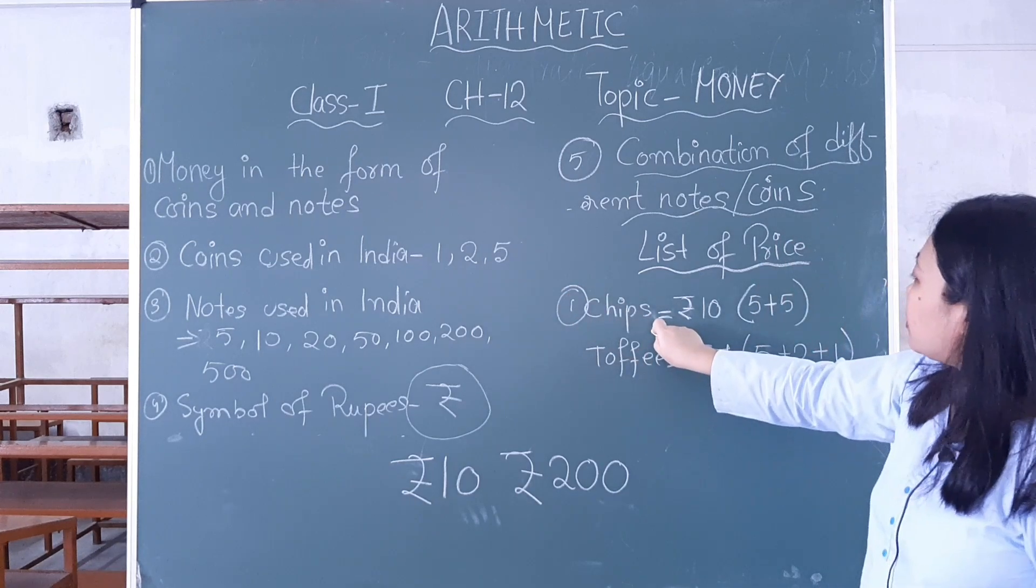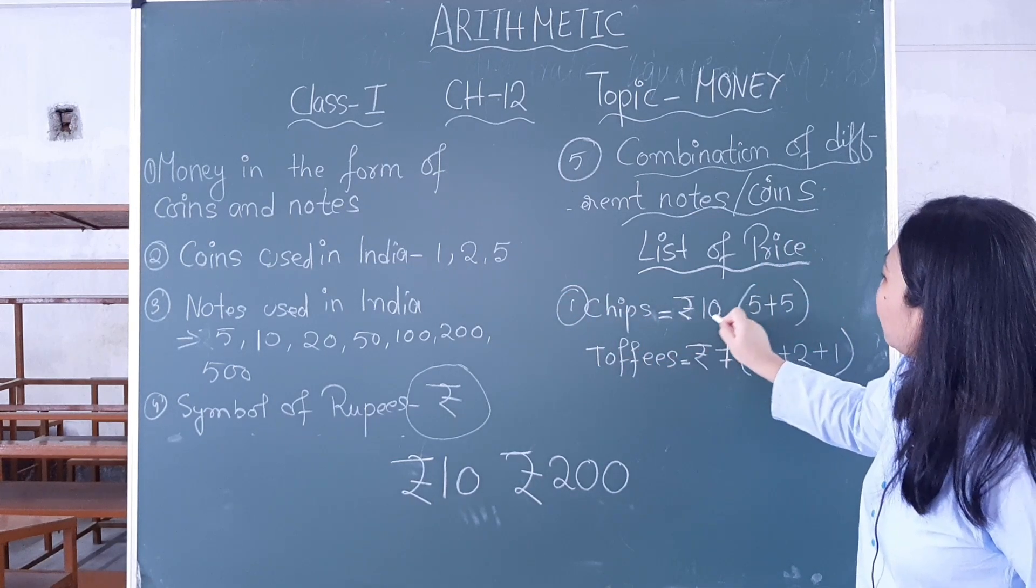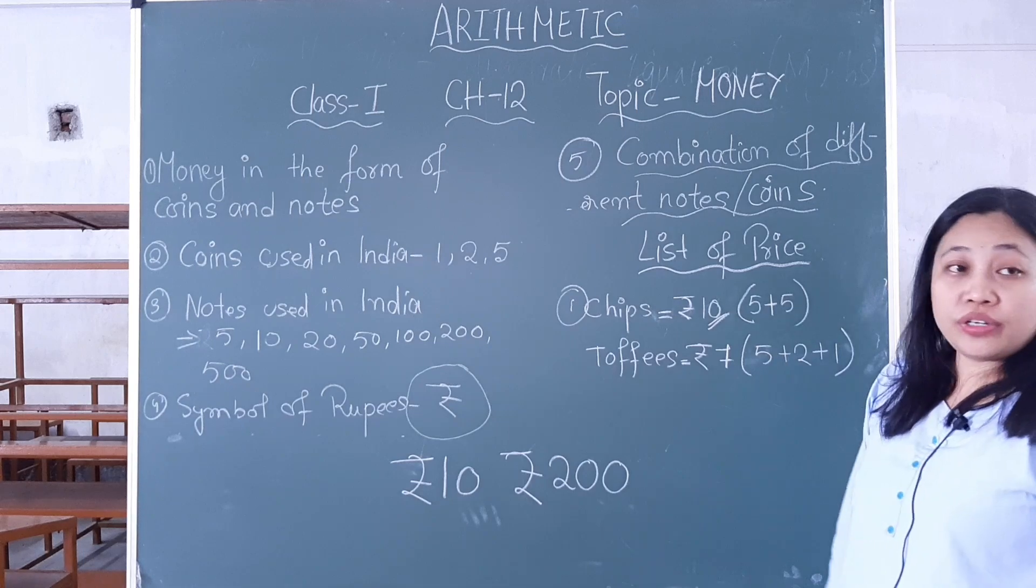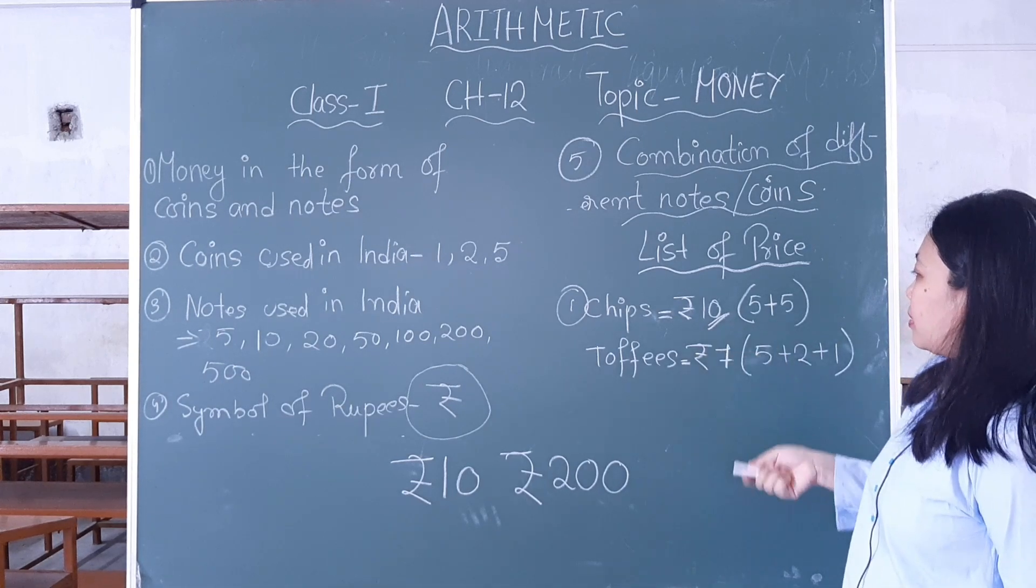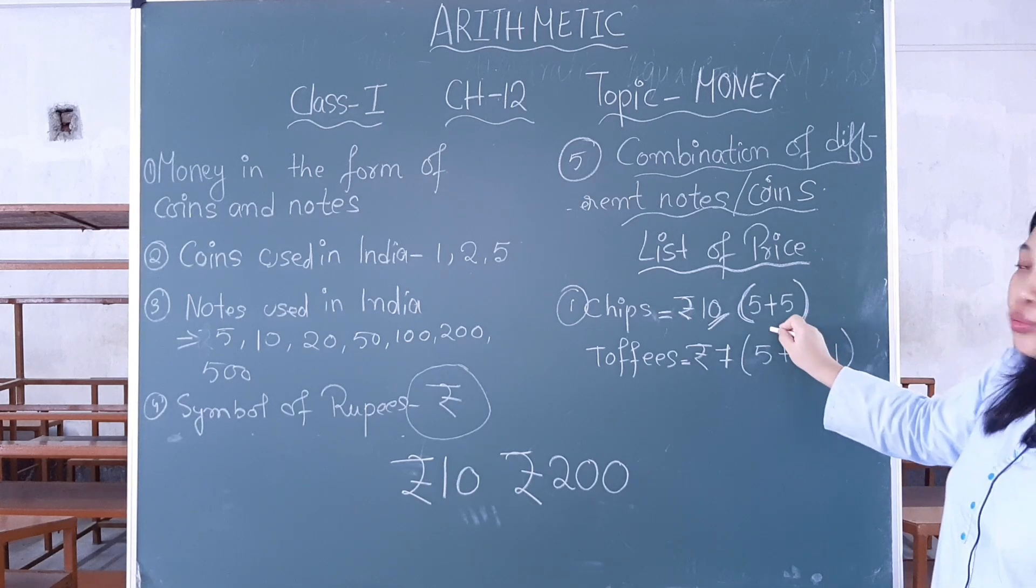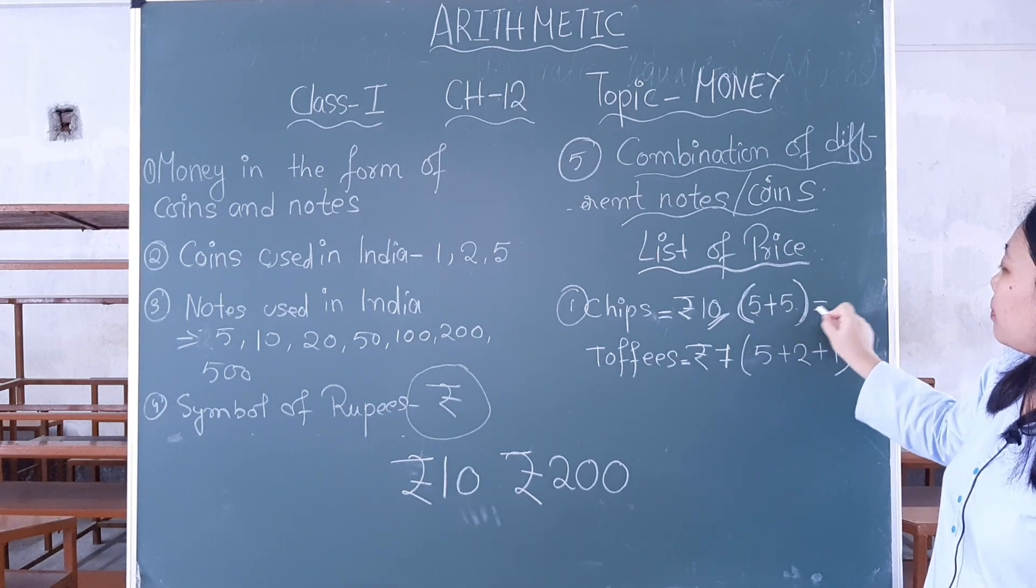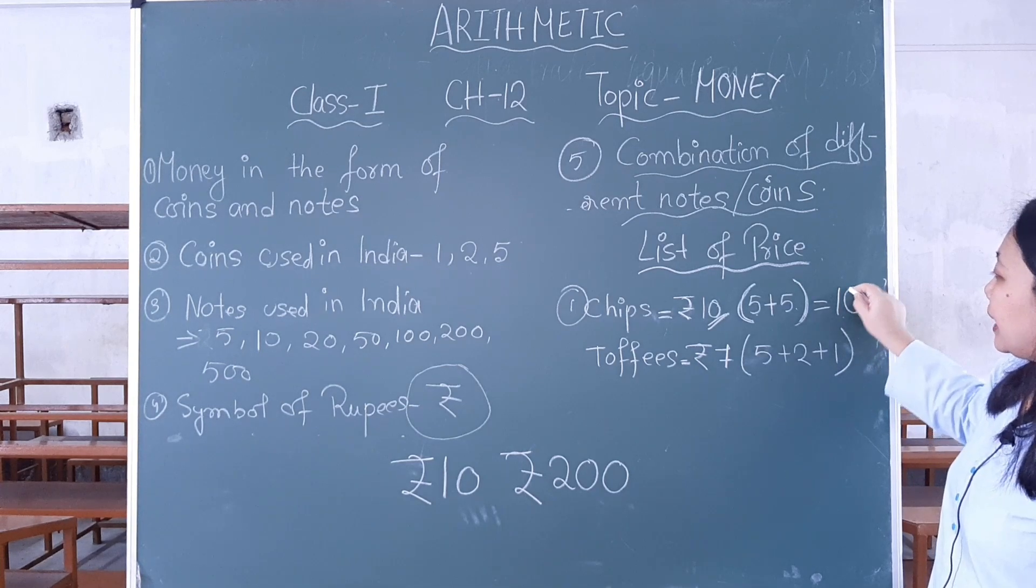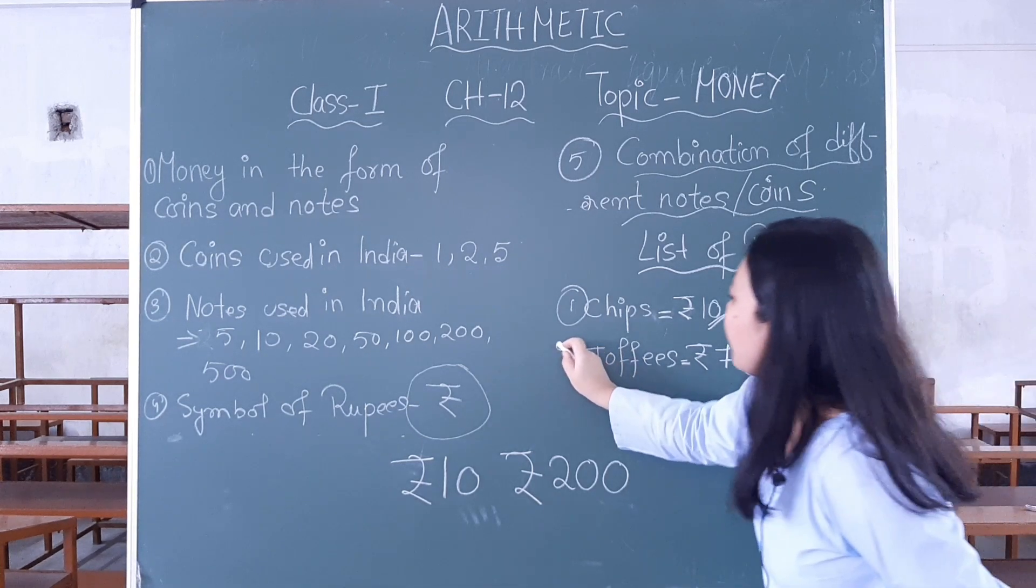First example: Chips. Suppose chips cost how many rupees? 10 rupees. If you don't have a 10 rupee note, you can break it into two parts. Two 5 rupee notes can make 10 rupees.